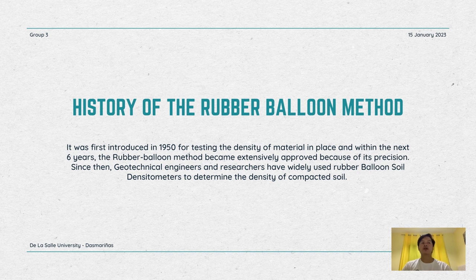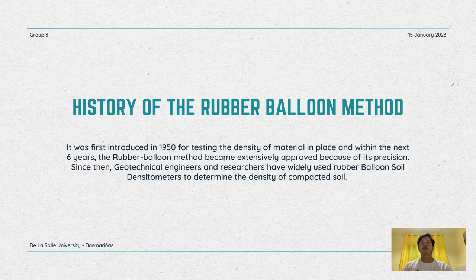A modified rubber balloon apparatus was designed and constructed to meet these requirements. During the trial and development period of two years, many modifications have been made and some rather unique features have been incorporated. The apparatus has been used and tried in various soils in the United States and Alaska. It is now used by the Experiment Station for all field density tests, including those on level surfaces.